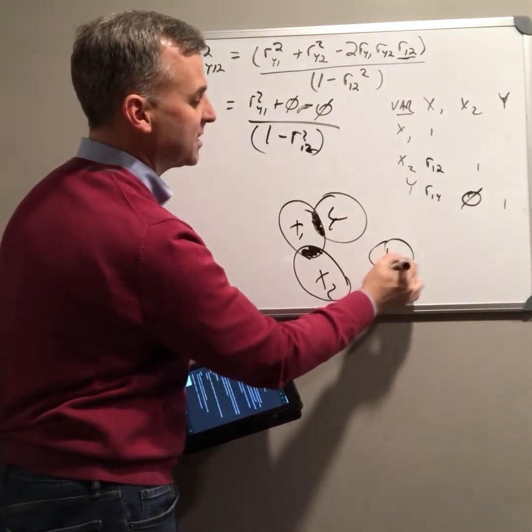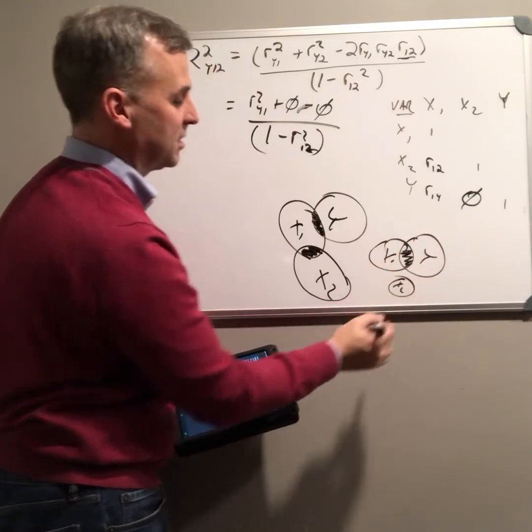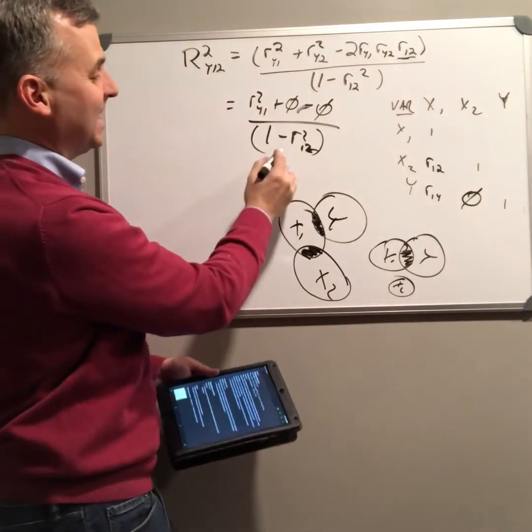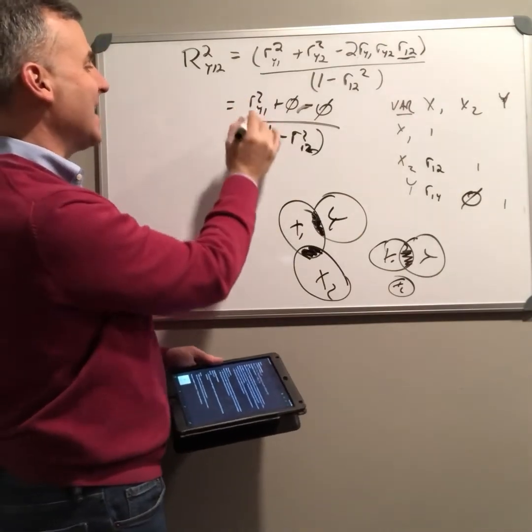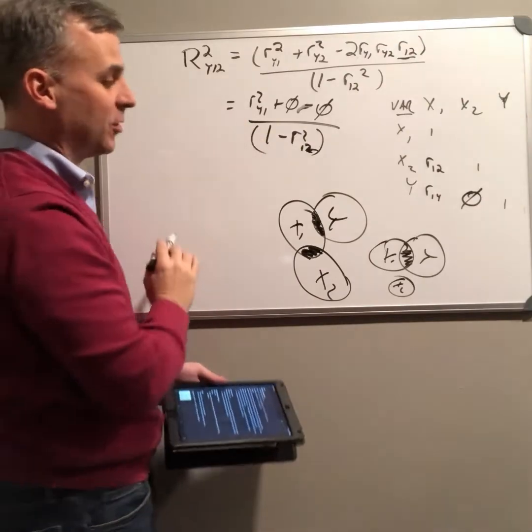So before, we talked about this in the bivariate correlation case, where x2 is out here and doesn't mean anything. In that case, the denominator here is 1. And in that case, if this denominator is 1, then r squared is equal to just the square of those relationships.